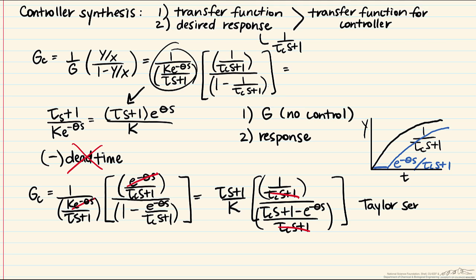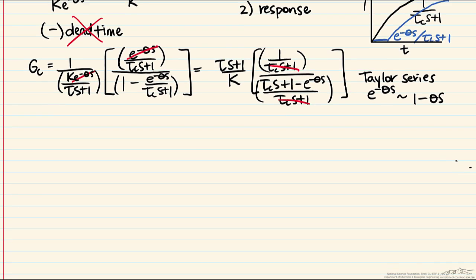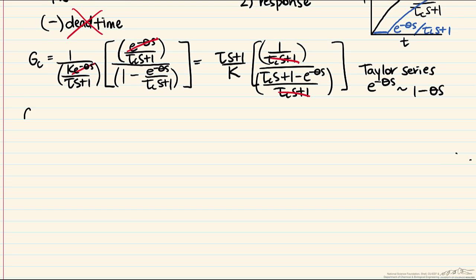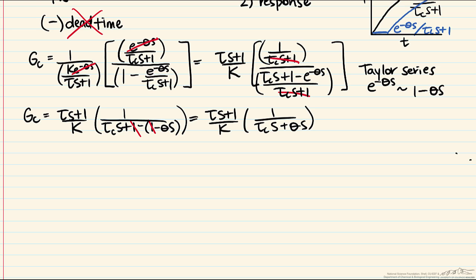The Padé approximation is available, but here we take advantage of a Taylor series approximation: e^(-θs) ≈ 1 - θs. Substituting this in, gc equals (τs+1)/k multiplied by 1 over [(τc·s+1) - (1 - θs)]. The ones cancel, giving the controller transfer function as (τs+1)/k multiplied by 1 over (τc·s + θs), which can be written as (τc + θ)·s.